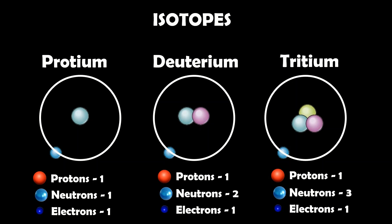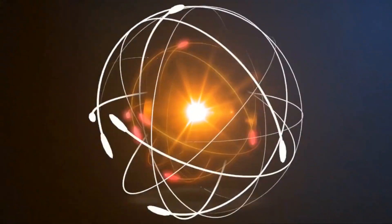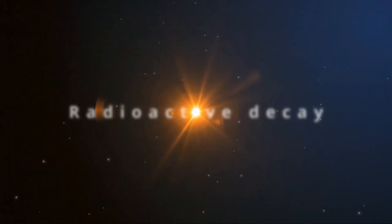Next comes deuterium. It has one proton, one electron, and two neutrons. Next comes tritium. It has one proton, three neutrons, and one electron. This makes the element highly unstable and begins to emit radiation in a process called radioactive decay.